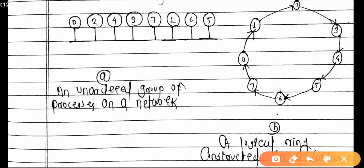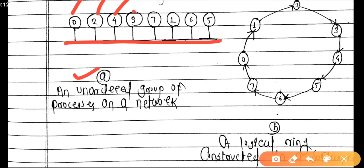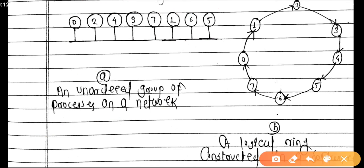We will directly look at the diagram. The first diagram shows an unordered group of processes on a network — for example, zero, two, four, three, seven, one, six, five — these are unordered processes, not in a sequential manner. Here, as you can see, a logical ring is constructed in software using the token ring algorithm, ordering them as zero, one, two, three, four, five, six, seven.